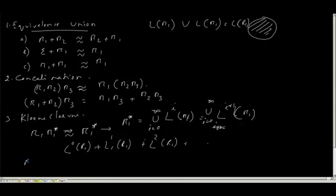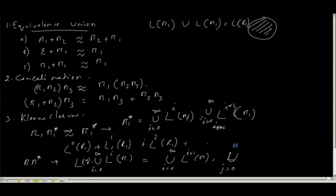When I am saying that R into R star, what is the language it is representing? It is representing L concatenation of union, i is equal to 0 to infinity, L of i, R. That will be what? That will be union i is equal to 0 to infinity. I have only one more concatenation, that is L of i plus 1 to R. So i will always be 0 to infinity. I can say that if I put down as j is equal to, so I can say it is union of j is equal to 0 to infinity, L of j, R. And hence, it is R1 star.